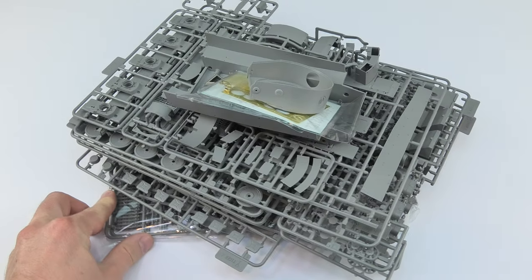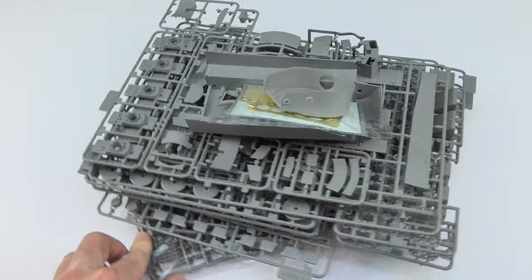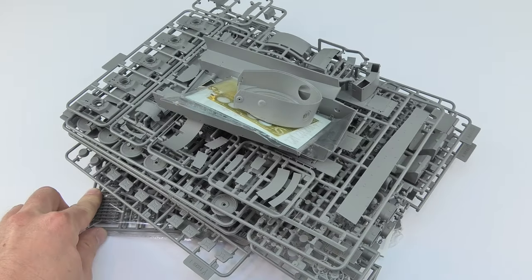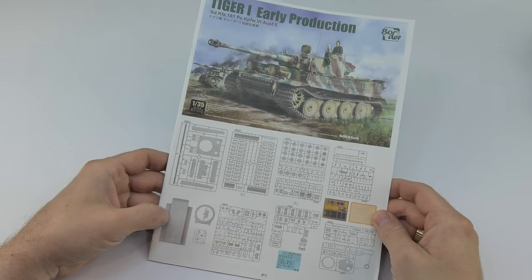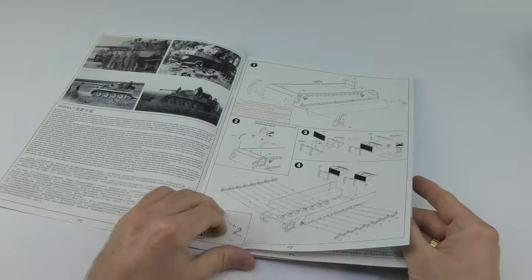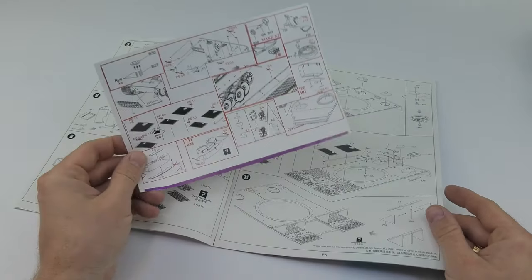We have here an early version of Tiger described as a participant in the Battle of Kursk. This is what we find in the box: standard gray plastic, some photo-etch, and decals.